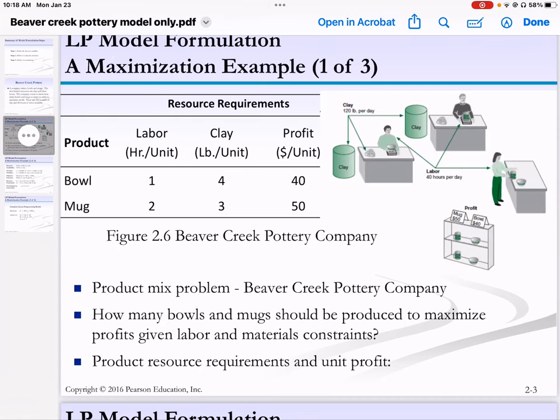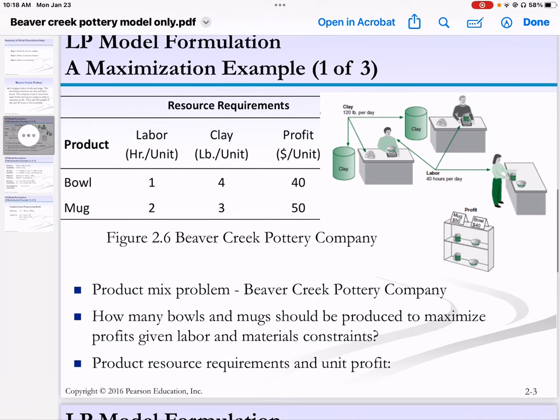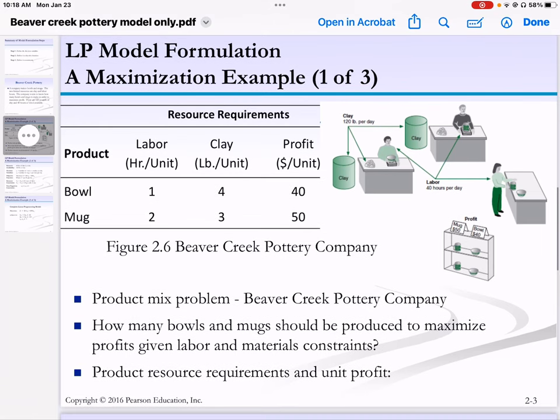Here's a table that shows how much of each thing is made and needed. A bowl requires one hour per bowl, four pounds of clay per bowl, and each bowl makes $40. A mug requires two hours of labor, three pounds of clay, and a mug makes $50.